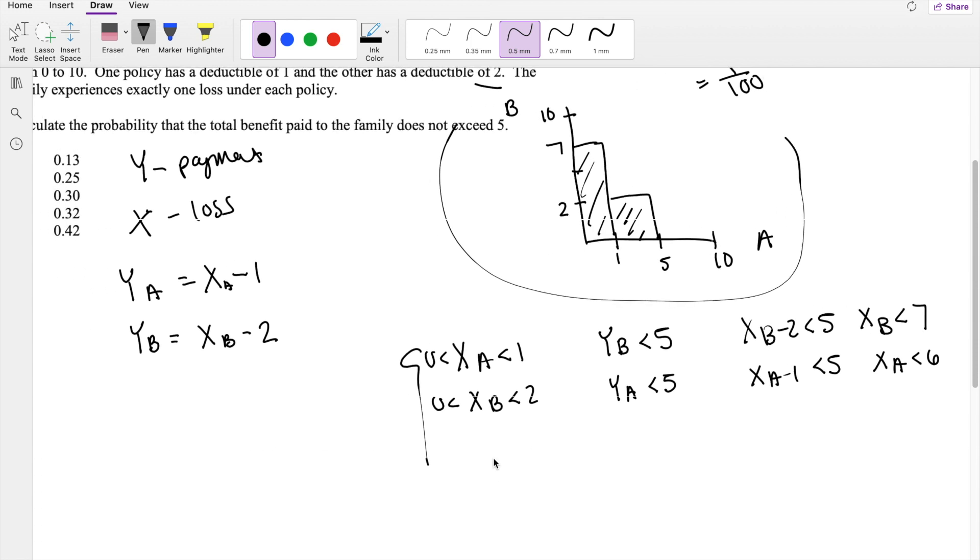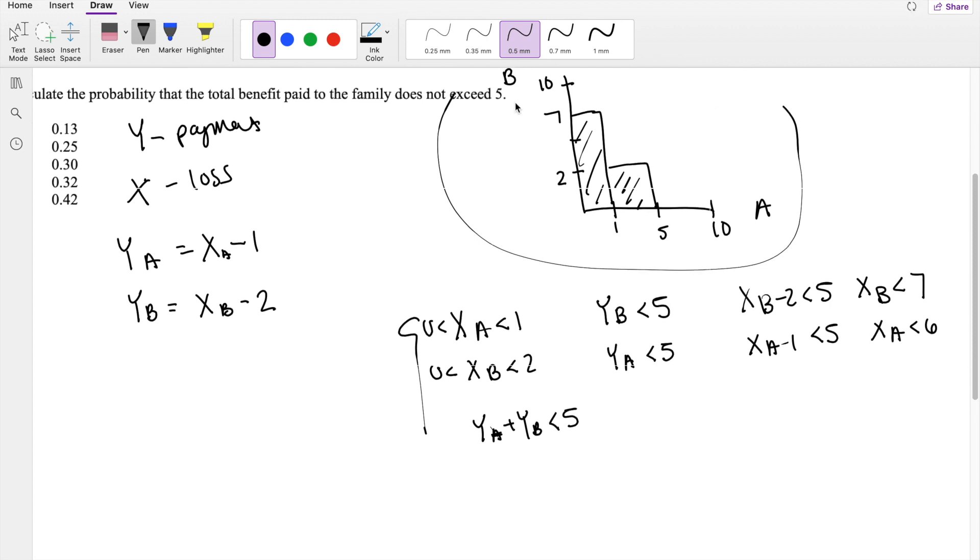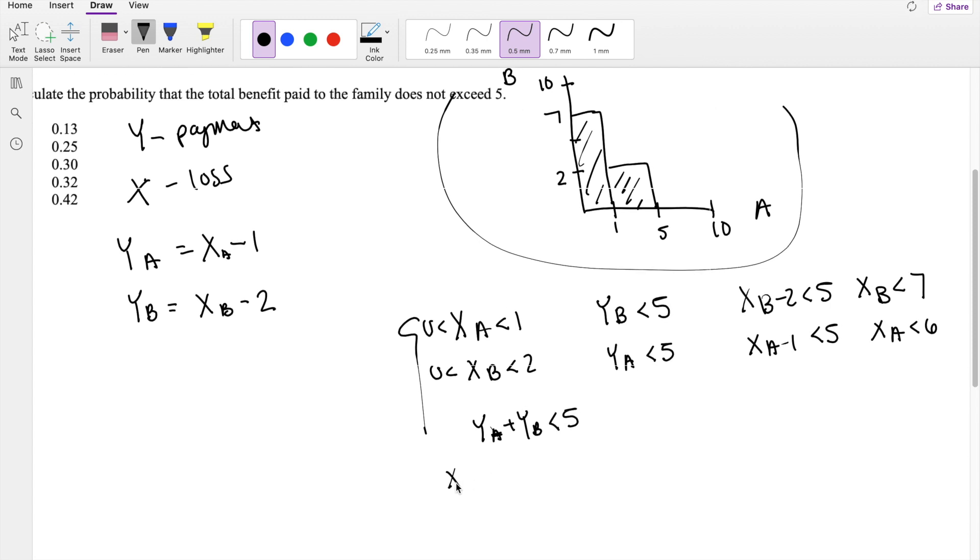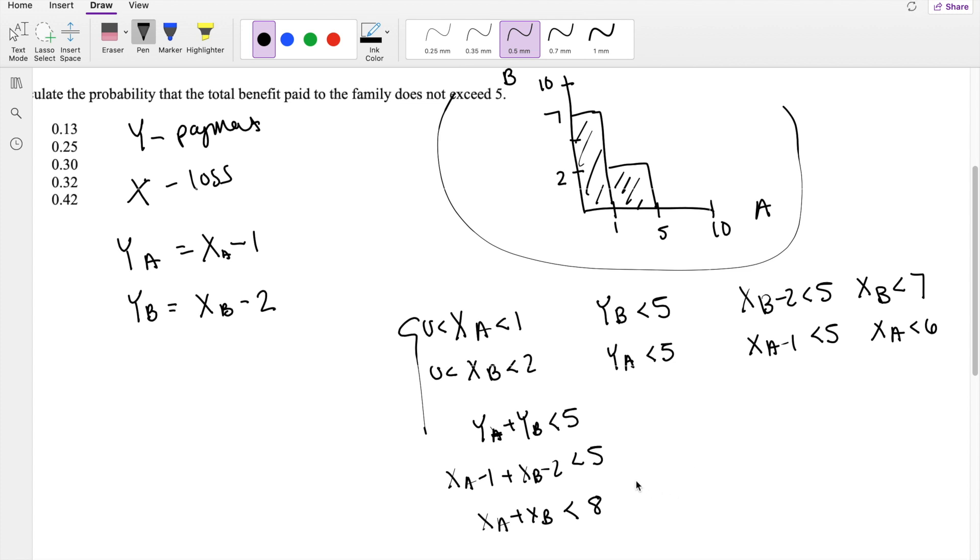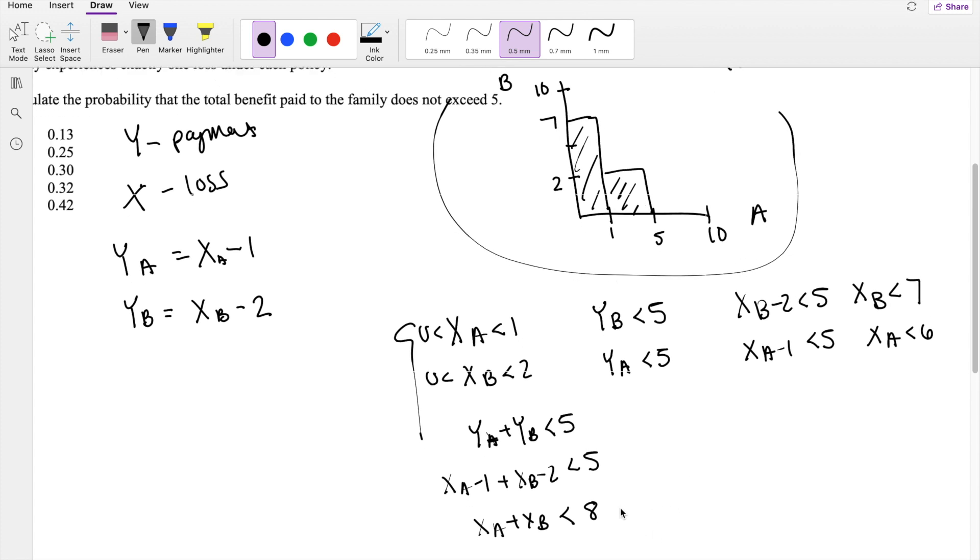And lastly, total benefit. So Y_A plus Y_B has to be less than 5. So then we know Y_A is X_A minus 1 plus Y_B, we know is X_B minus 2 is less than 5. So then X_A plus X_B must be less than 8. So then if I put this in terms of X_B, this is the same thing as saying X_B is less than 8 minus X_A.